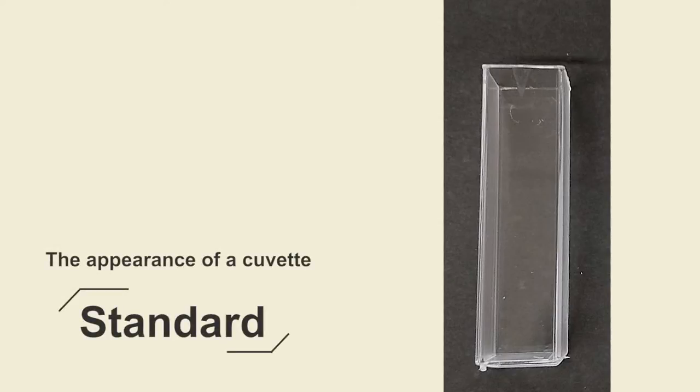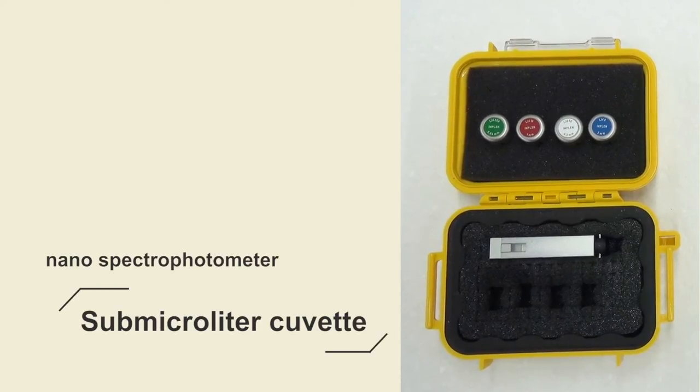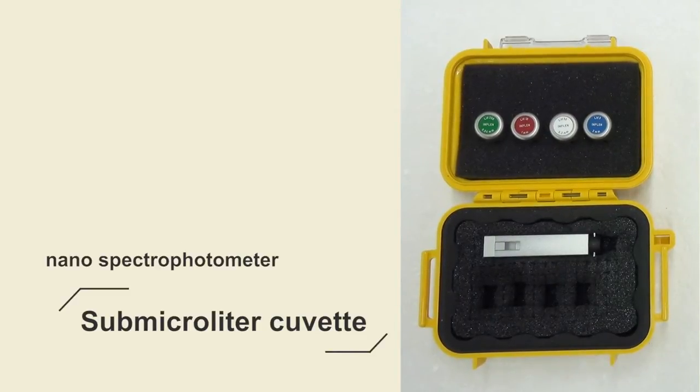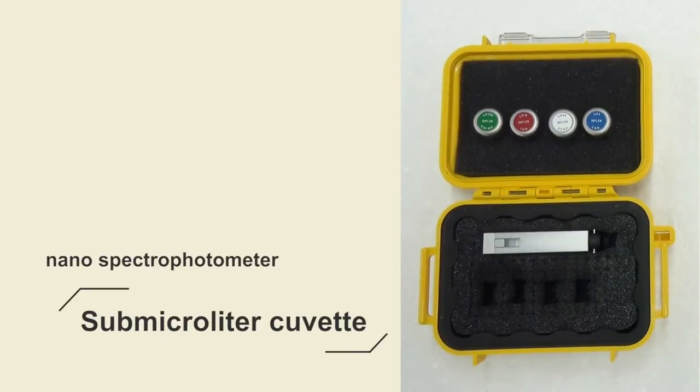The appearance of a cuvette may be standard or Y-shaped. The sub-microliter cuvette for the nano spectrophotometer features a patented internal design and requires a proper lid based on the kind and concentration of the samples.